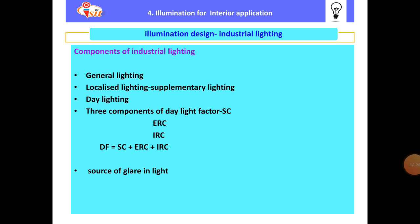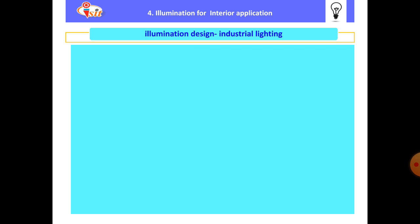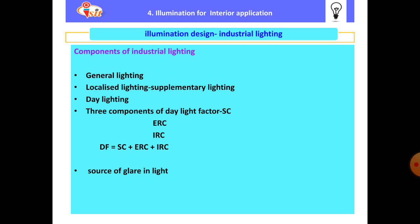Sources of glare in daylighting: first, direct sunlight in the morning and evening on the east and west when the sun is low in the sky. Second, externally reflected light resulting from the luminance of roofs and neighboring structures. Third, internally reflected light from room surfaces, especially desktops, which can produce glare.